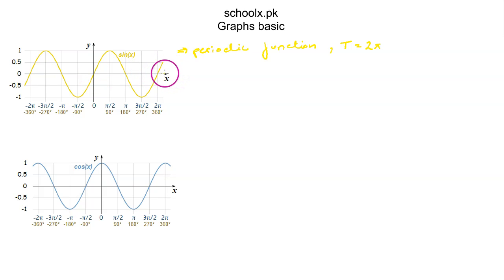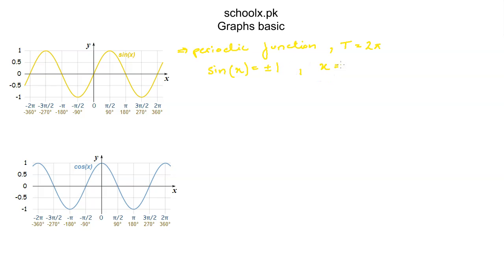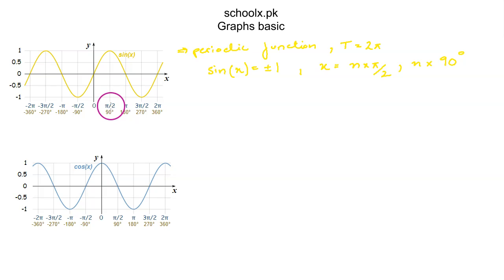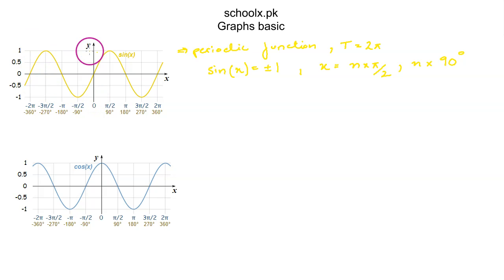After 2π it is repeating itself, and you can also see that this graph of sine is not symmetrical about the y-axis. Sine of x is positive or negative 1 when x is odd multiples of π/2, or 90 degrees. So when x is π/2, sine is 1. When x is 3π/2 or 270 degrees, sine is negative 1. When x is negative π/2, sine is negative 1. When x is negative 3π/2, sine is positive 1.